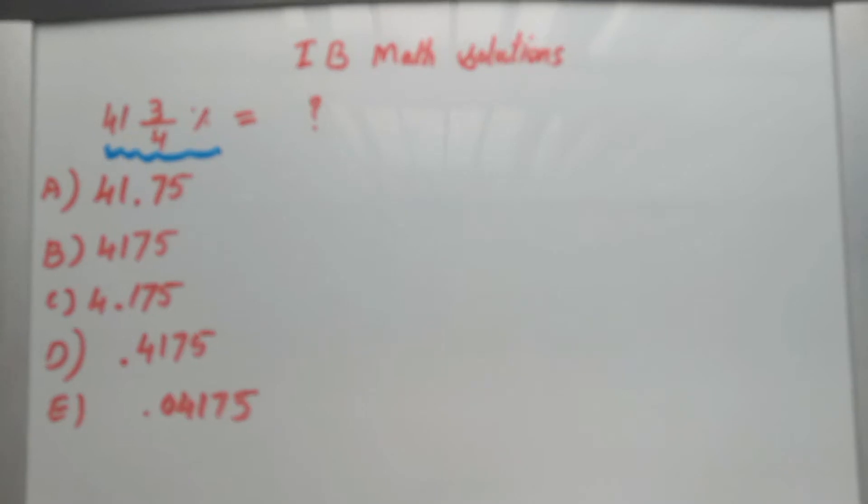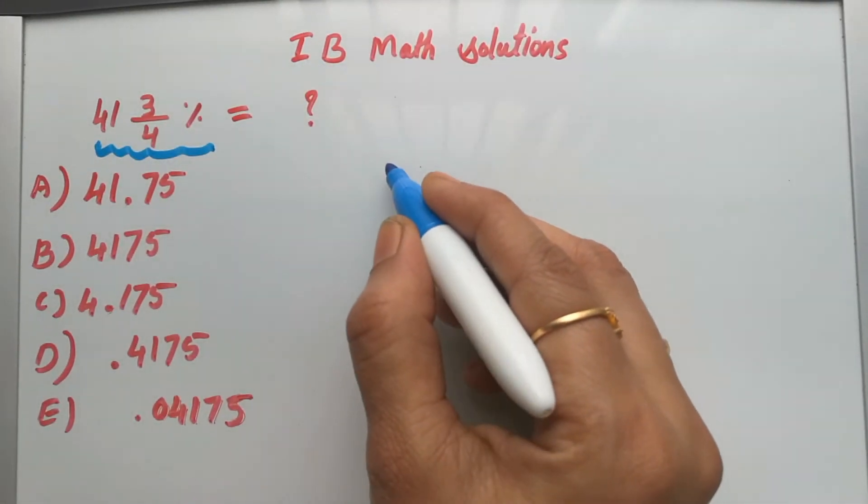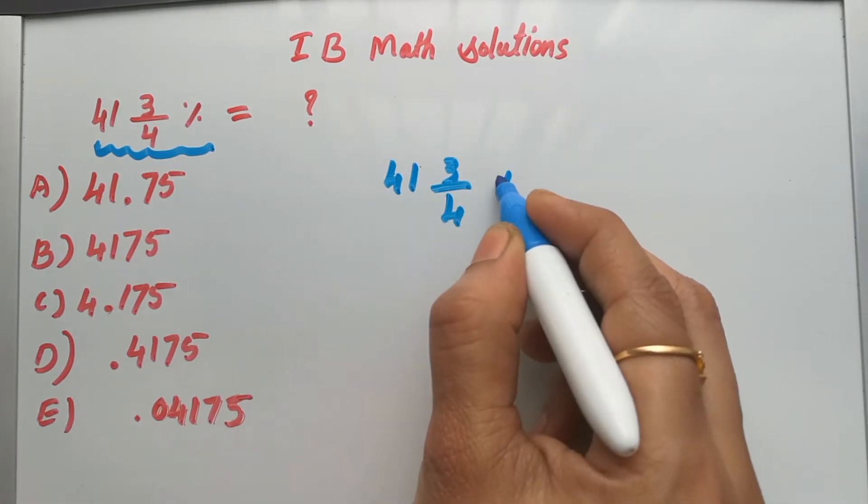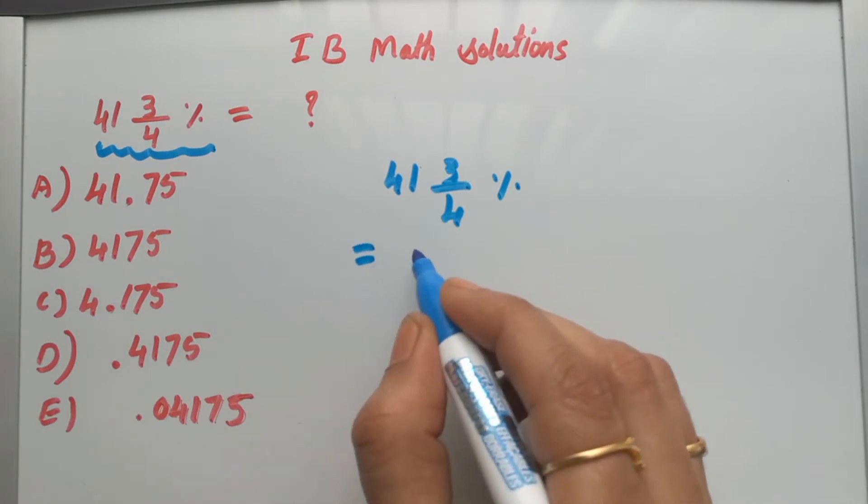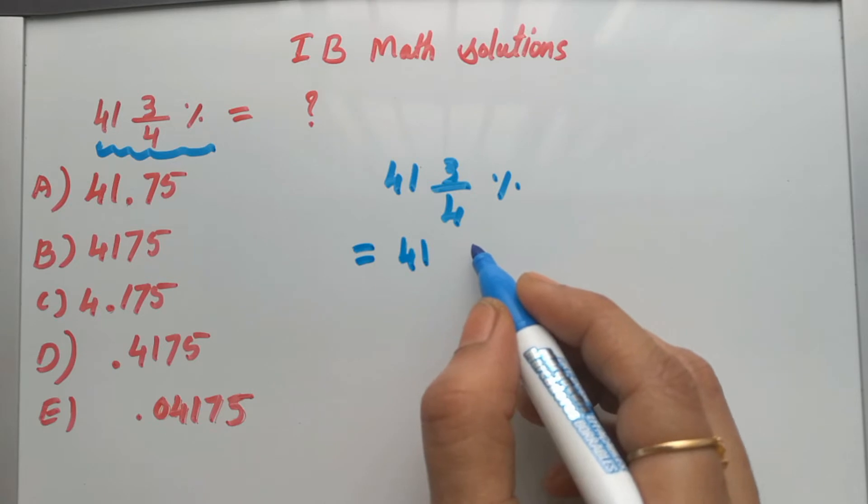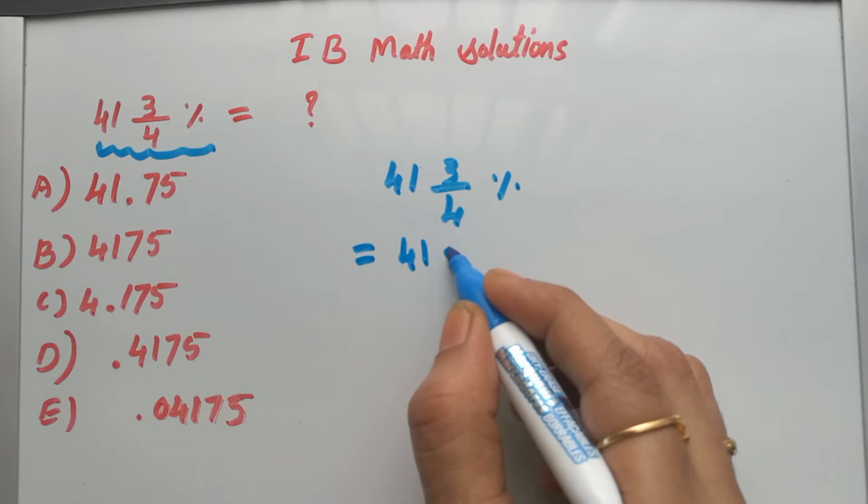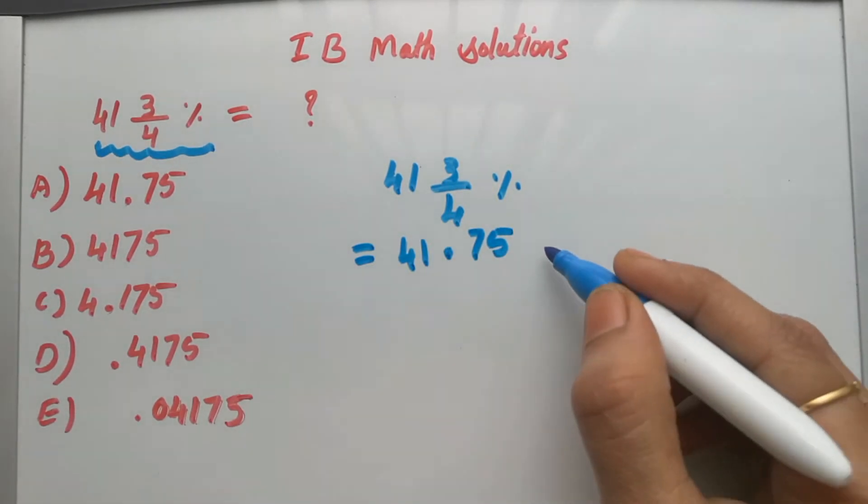How much is 41 3/4 percent? 3 over 4 means 3 quarter, that is 75. So this is 41.75 percent.